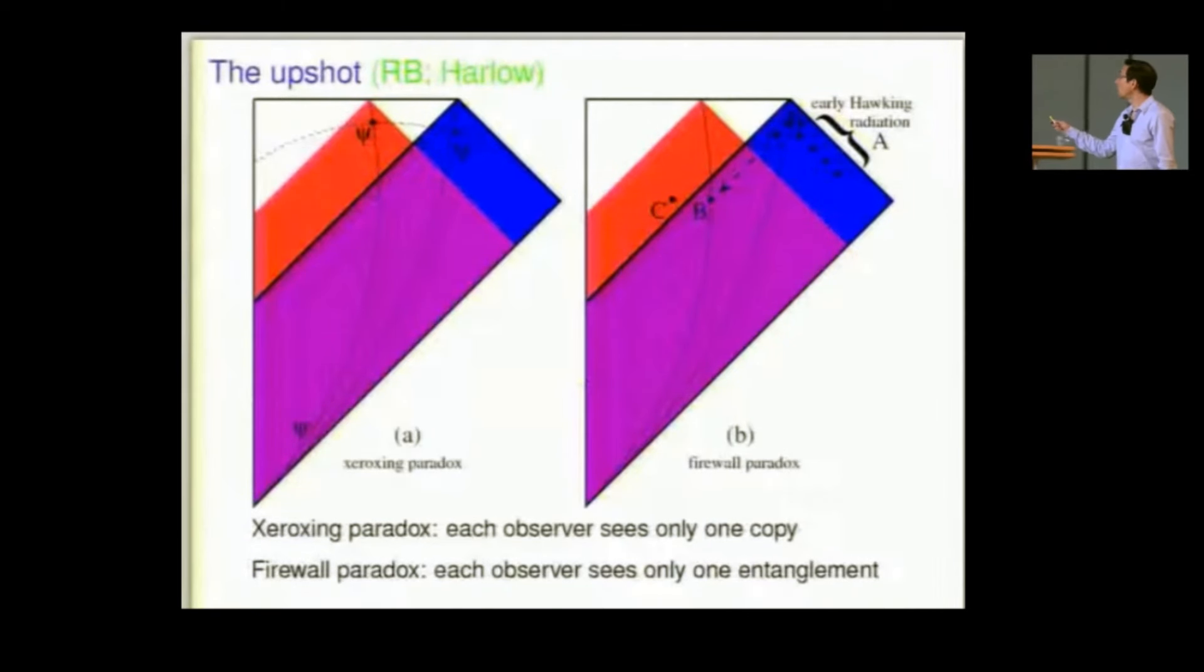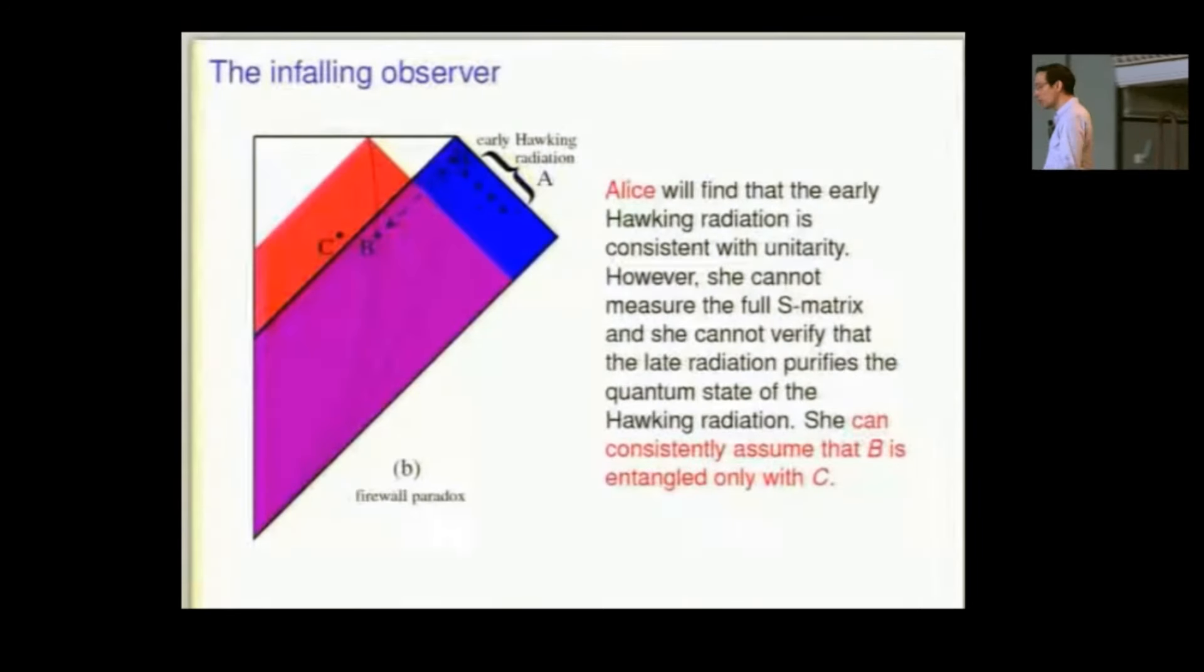So this is the work of Dan Harlow and my own work independently of each other. And I'll give you the upshot first, and the upshot is easy to convey by just drawing an analogy with the resolution of the xeroxing paradox. That's here on the left. Here's the inside copy of psi. Here's the outside copy of psi. Each observer, blue and red causal diamond, sees only one copy. The resolution of the firewall paradox is going to be that each observer sees only one entanglement. Here we have two incompatible entanglements. Each observer can actually only verify one.